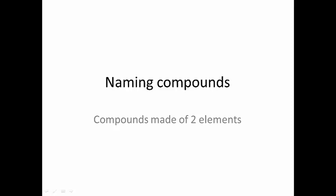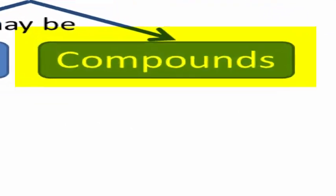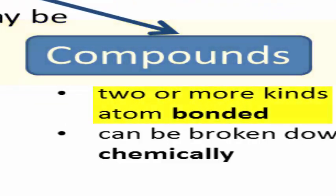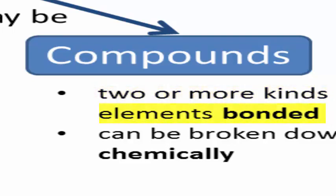How do we represent and name compounds that are made of two elements? Remember that a compound consists of two or more different kinds of atoms bonded together. In other words, two or more kinds of elements bonded together.